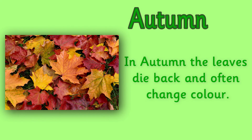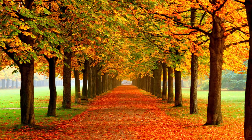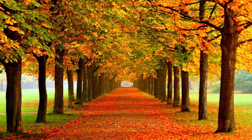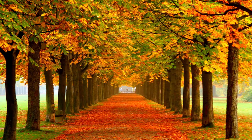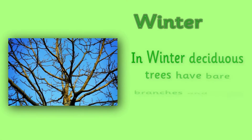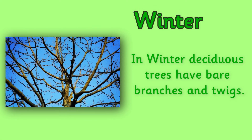In autumn, the leaves start to die back and often change colour. You will see a range of beautiful colours: oranges, reds, yellows and browns. In winter, deciduous trees have bare branches and twigs.